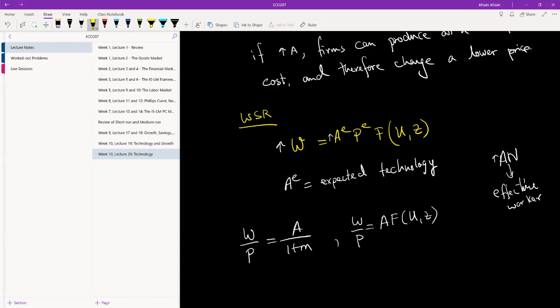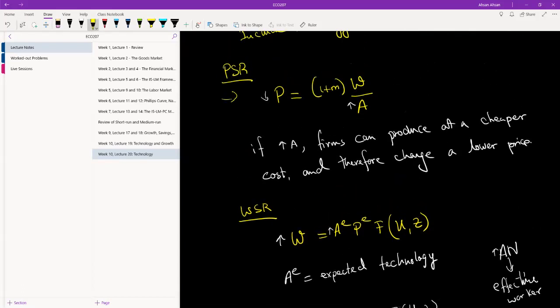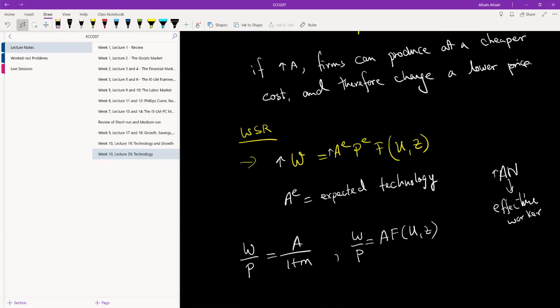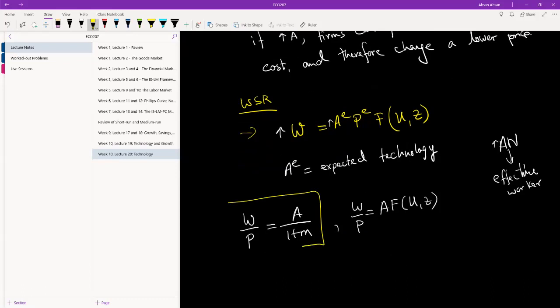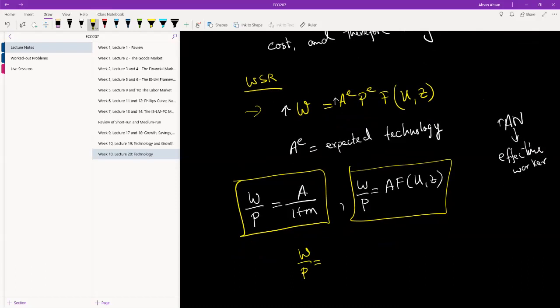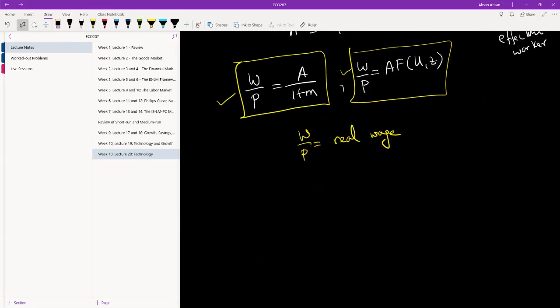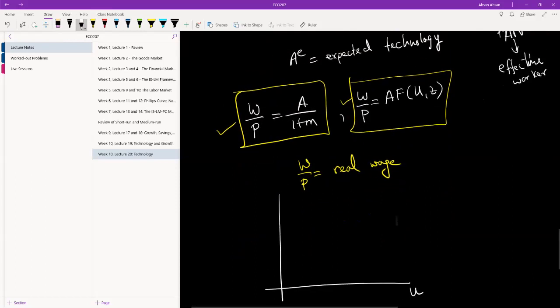So once again, I've talked about the interpretation of this equation and this equation. Why don't you guys just pause this video and take a few minutes to interpret this equation and this equation. Remember that on the left side of each equation we have W/P, which is real wage or inflation adjusted wage. And so just take a few minutes to figure out if you're absolutely certain you understand what this equation is and what this equation is. Okay, what I'm going to do is draw the diagram.